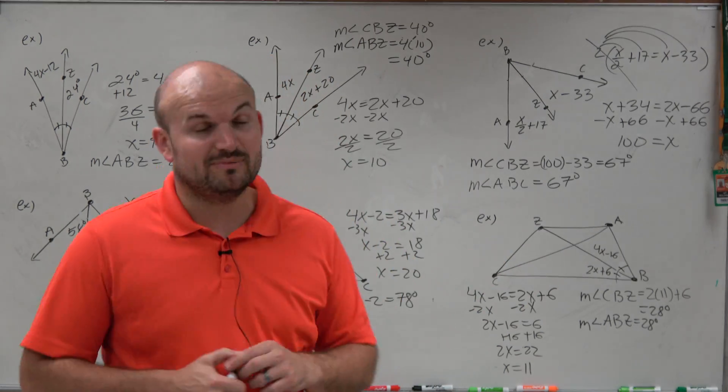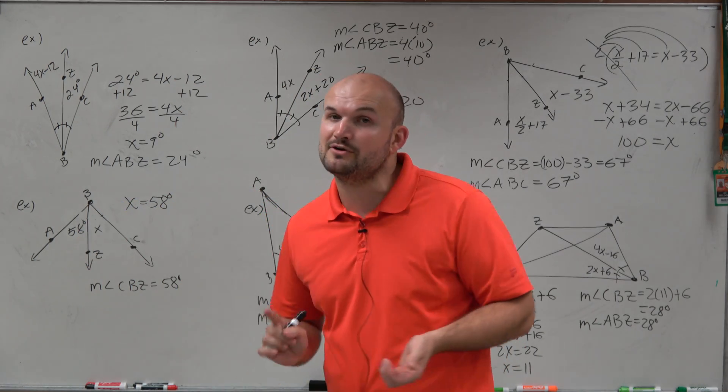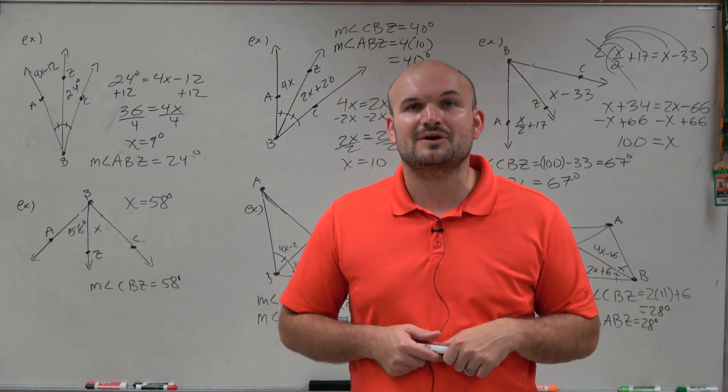So there you go, ladies and gentlemen. That is how you solve for your missing variable, as well as find the measure of your angle when given an angle bisector. Thanks.